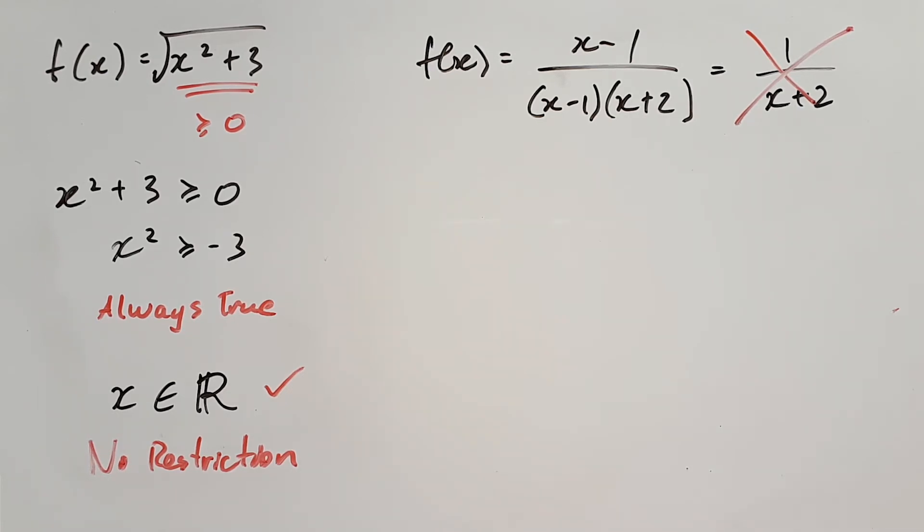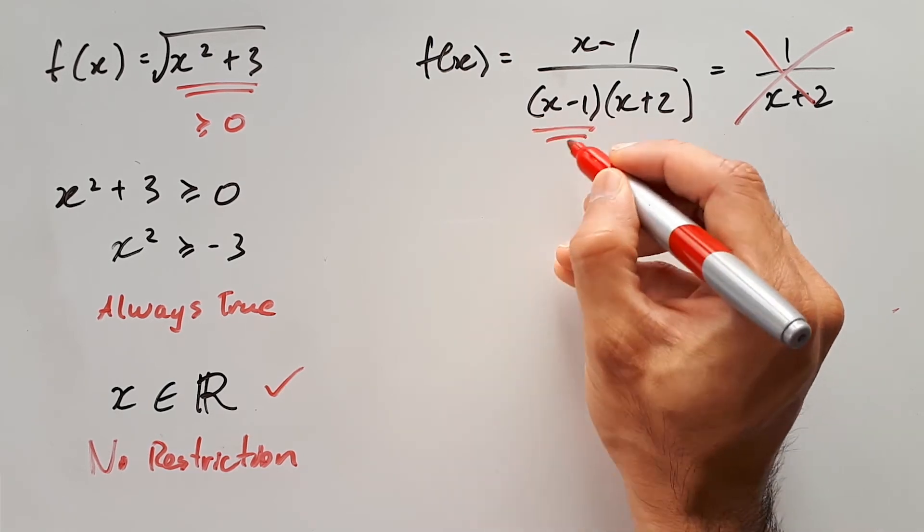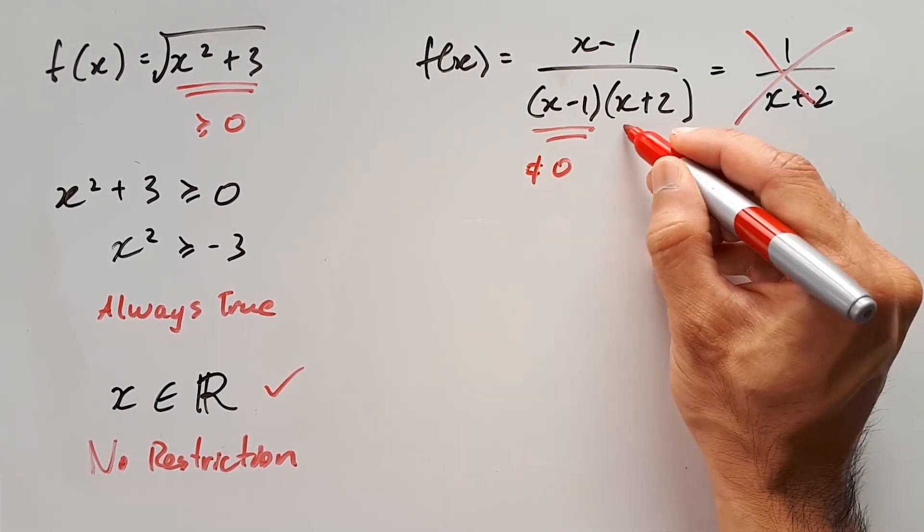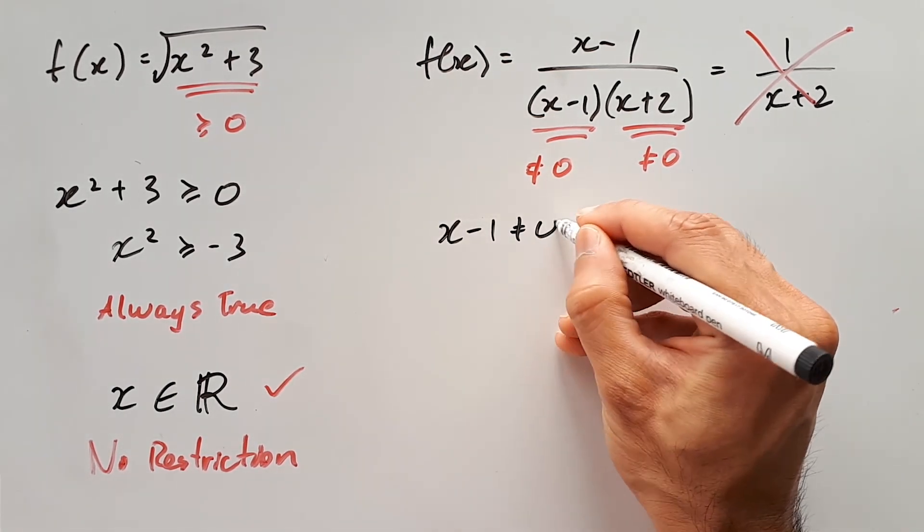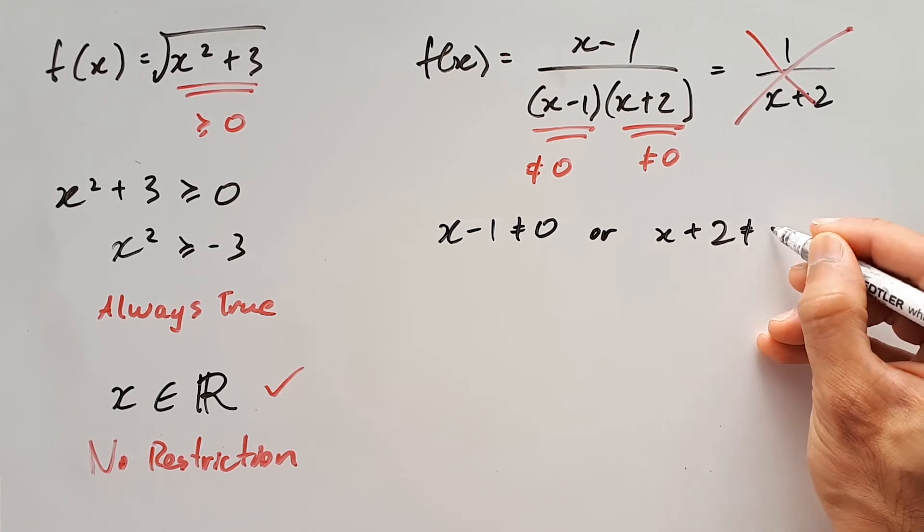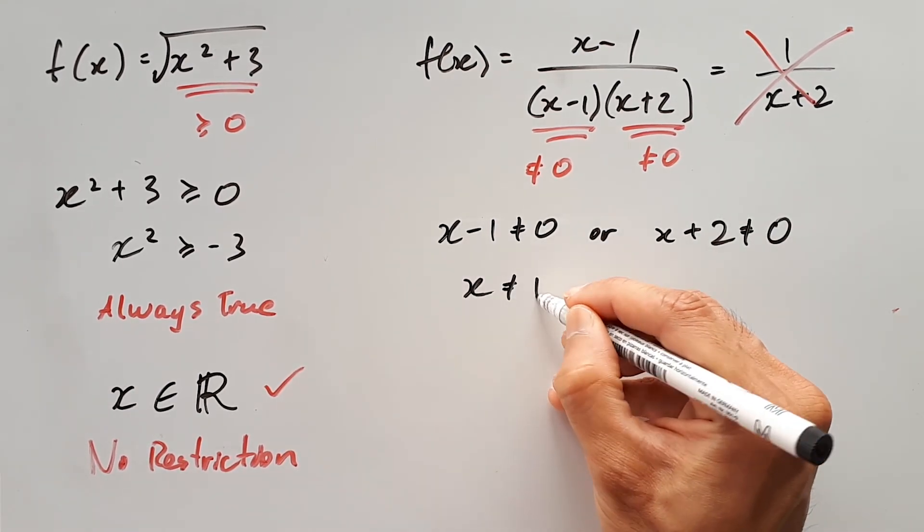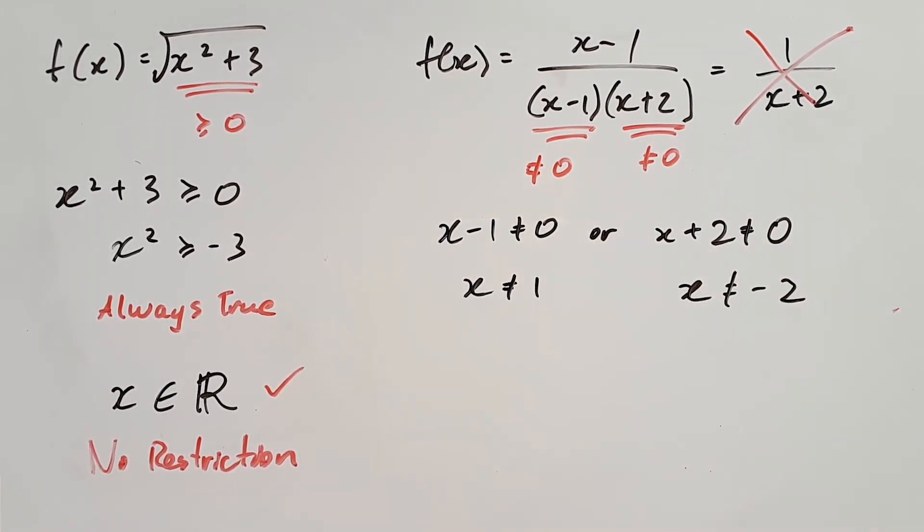So to find the restriction in this question, we must take note that x minus 1 cannot equal 0, and x plus 2 also cannot equal 0, because you cannot divide by 0. So set up two equations for these relationships, and rearrange them to find our two exceptions: x cannot equal 1, and x cannot equal negative 2.